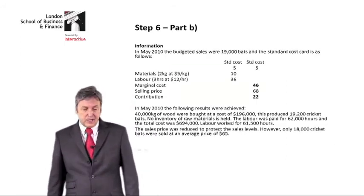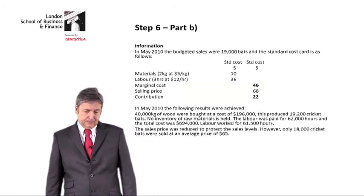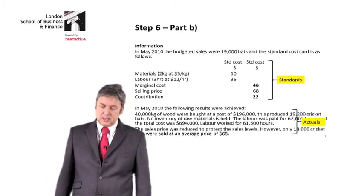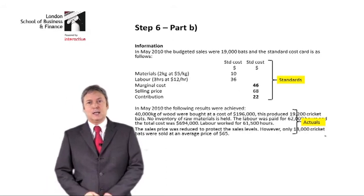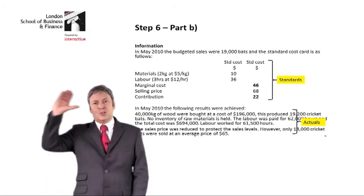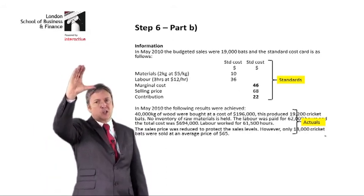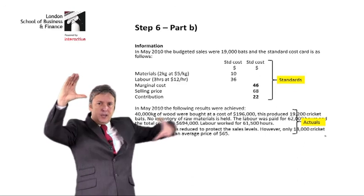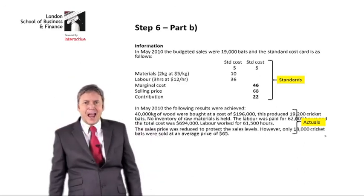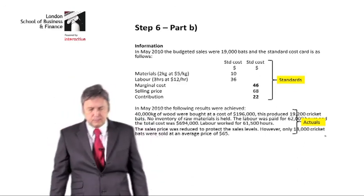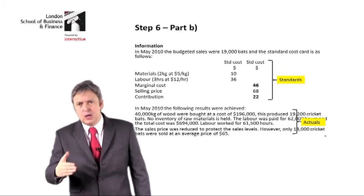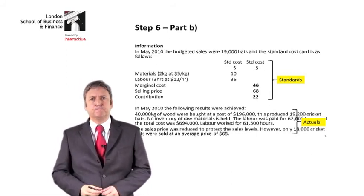Here is the narrative. It is quite standard the way that it's laid out — we have the standards at the top, which is what we expected to achieve, and we have the actuals at the bottom, which is what we actually achieved. You see this in every single variance analysis question.